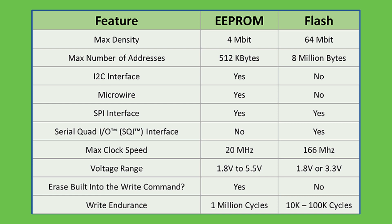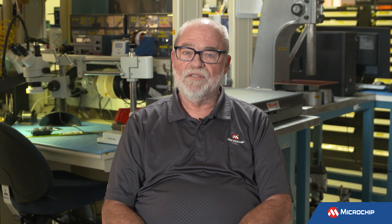Serial EEPROMs will have a higher write endurance, so you can write more times to it than you can Flash. Serial EEPROMs are most often used in vital product data storage applications and calibration and configuration data applications. Serial Flash is usually used for code storage and long-term updates. So if you don't have to update very often, please use a Serial Flash. If you want to write more often, please use a Serial EEPROM.